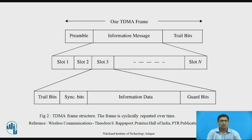Figure 2 shows the TDMA frame structure. The frame is cyclically repeated over time. One TDMA frame consists of a preamble, followed by the information message, followed by the trail bits. The information message is divided into n slots. Each slot consists of trial bits, followed by sync bits, followed by the information data and the guard bits.